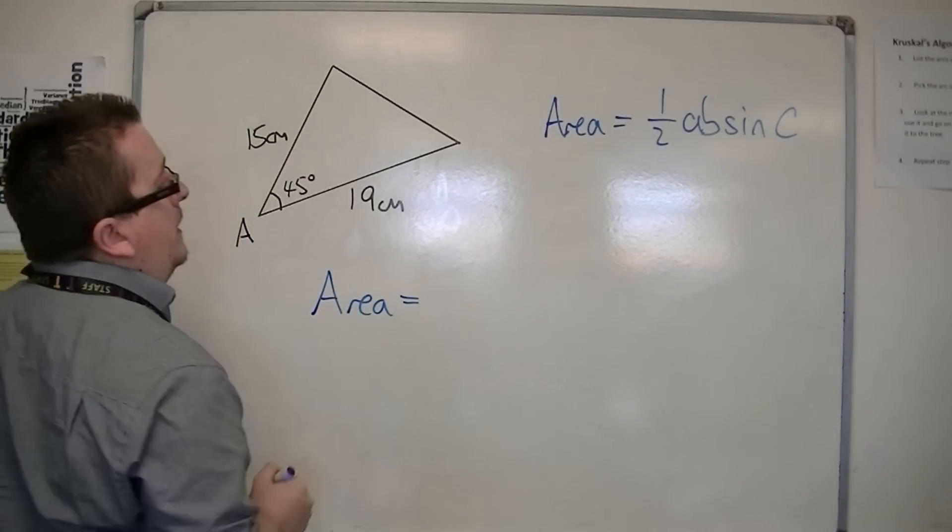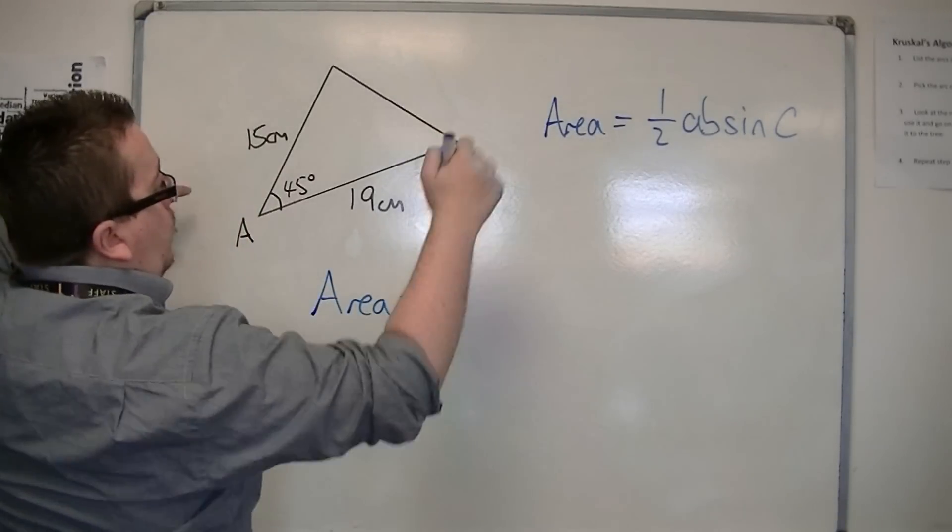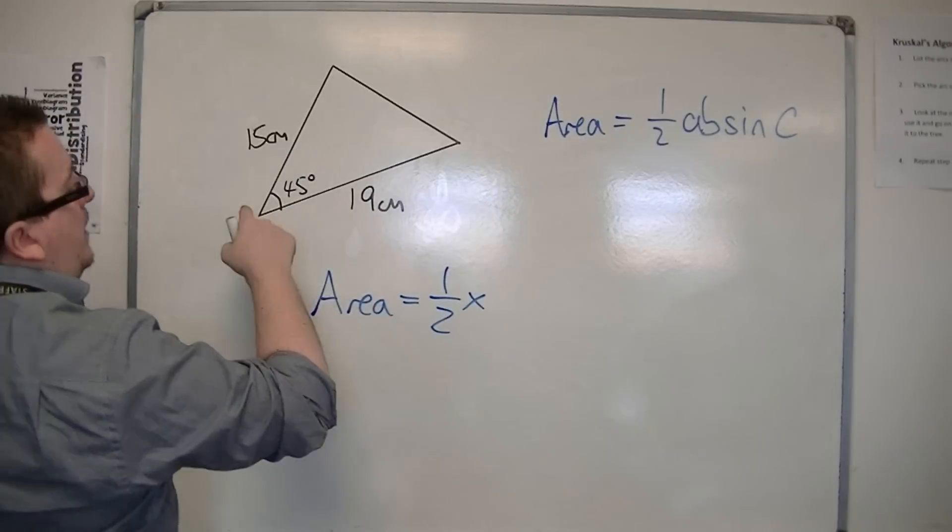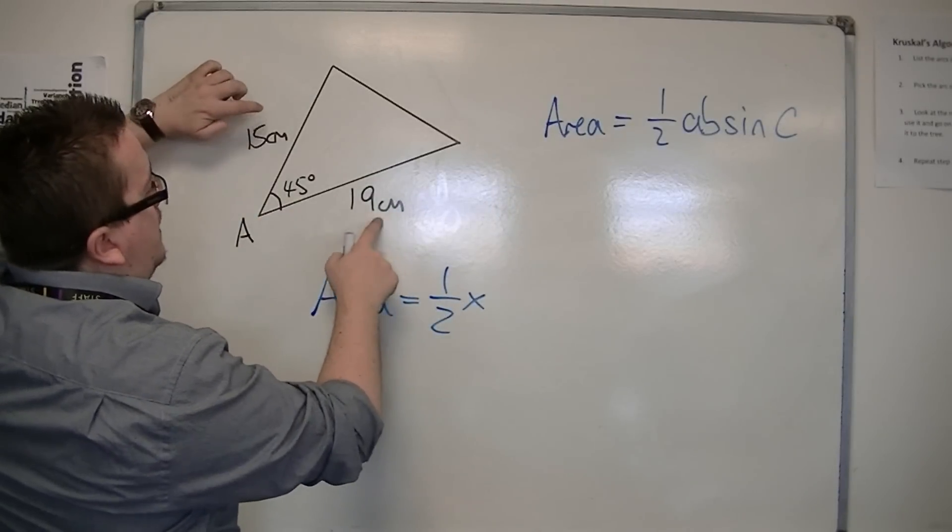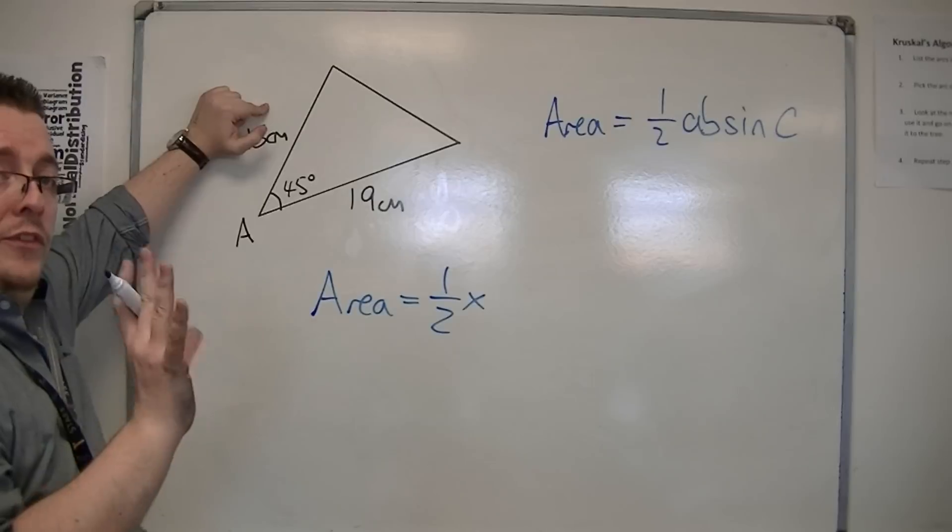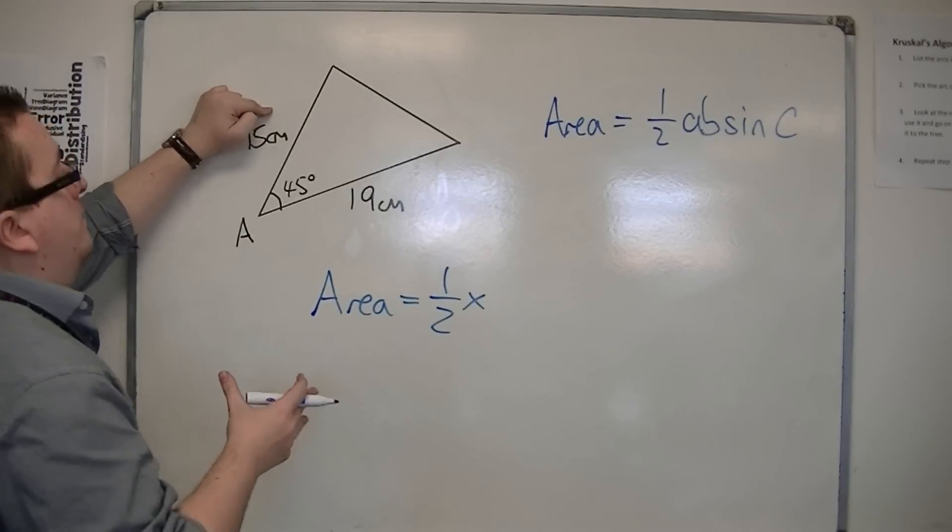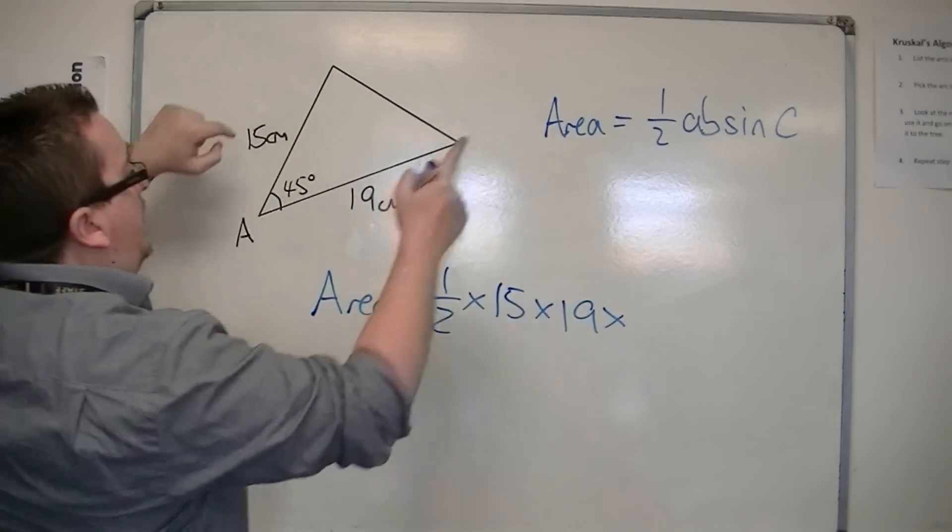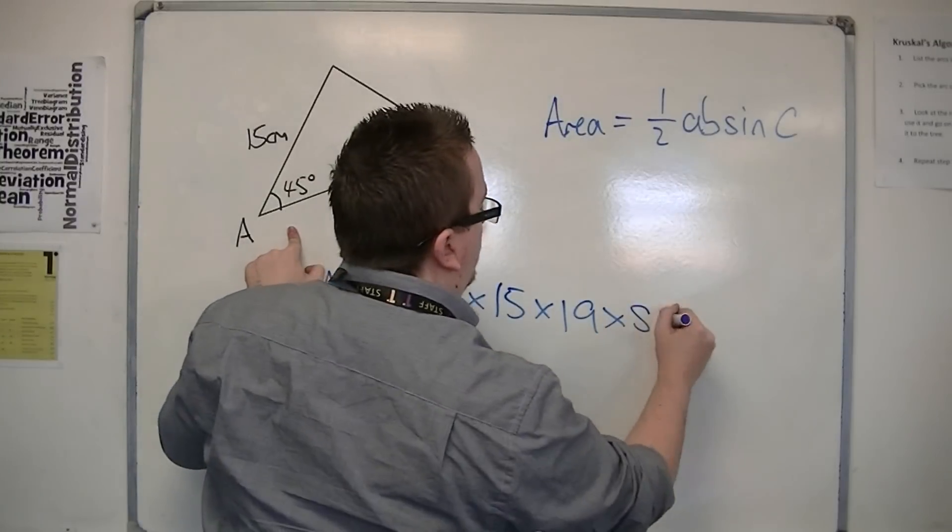So the area is equal to one half of the product a and b, which are going to be the two sides either side of the angle in question. So 15 times 19 times by sine c, so sine of 45 degrees.